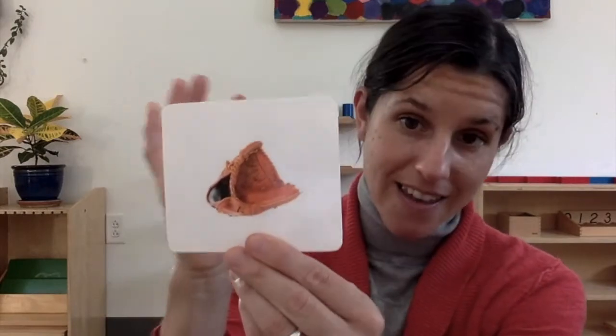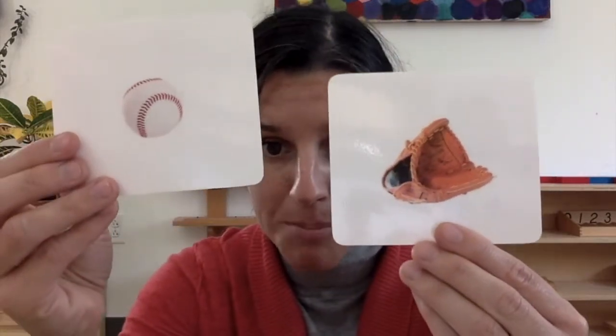Now there's another thing that goes with baseball that's really important. Do you know what that is? We call this a baseball mitt or baseball glove. Your hand goes inside and it's made of leather. So when you catch the ball you protect your hand from the really hard baseball. It's important when you play baseball to have a baseball glove or mitt.